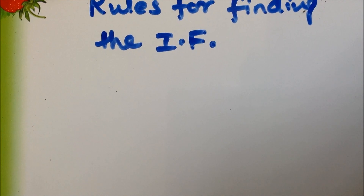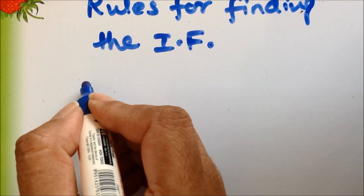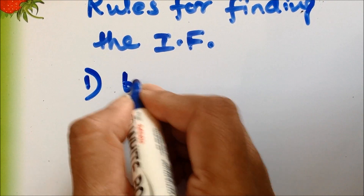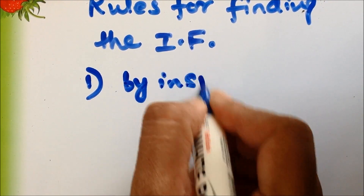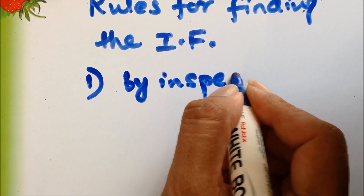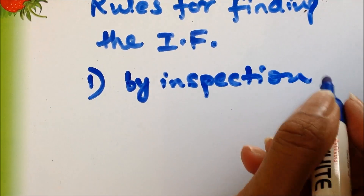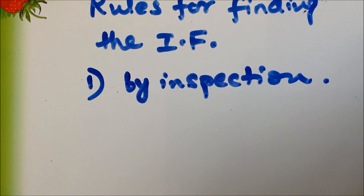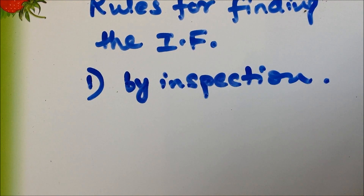The first rule is that the integrating factor can be found by inspection. That means you will first check the given differential equation, then you will see if some terms can be rearranged, and whether we can solve the given equation by rearranging the terms.